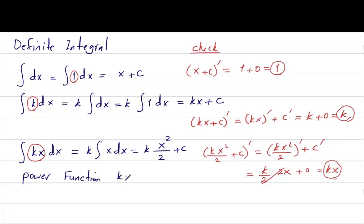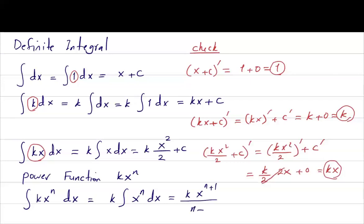The integral of k x to the n dx is k times the integral of x to the n dx, which can be written as k times x to the power n plus 1, divided by n plus 1, plus constant of integration.